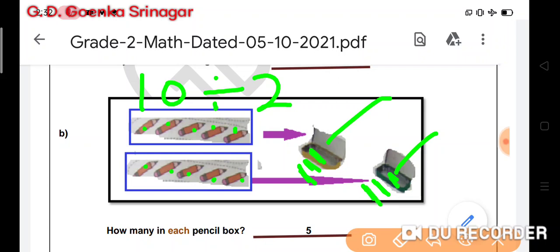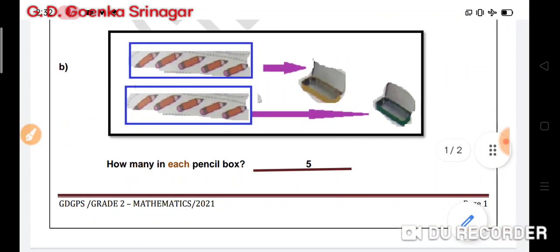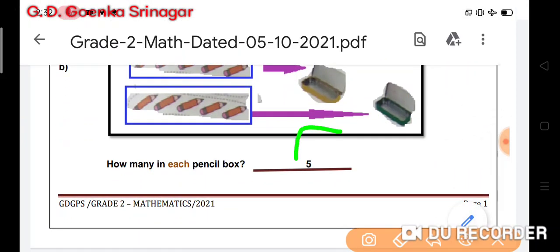Till now I distributed 6 pencils. I am still left with 4, so 1, 1, 1, and 1. Let us count: 1, 2, 3, 4, 5 in one box, and 1, 2, 3, 4, 5 in another box. So each pencil box has 5 pencils in them.